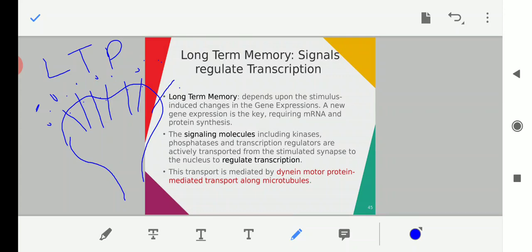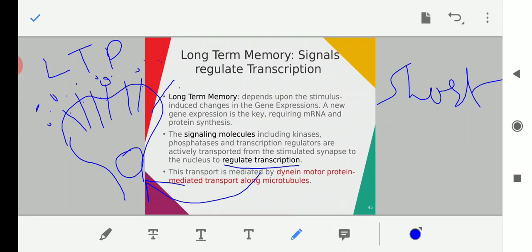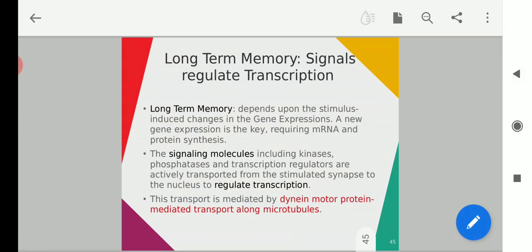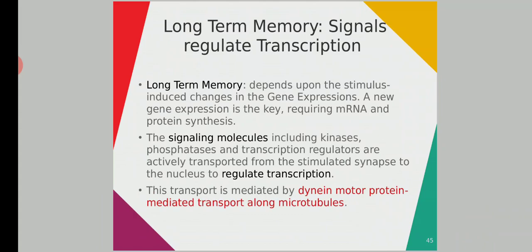The number of receptors increased and neurotransmitters were received by this large number of receptors — this is your short-term memory. Now, the transcription will take place in the nucleus, so the signaling molecules have to reach from the surface towards the nucleus. This transport is important. The transcription regulators are actively transported from the stimulated synapse to the nucleus, carried out by dynein motor protein-mediated transport along microtubules.